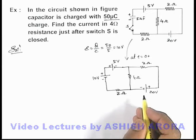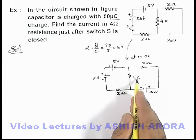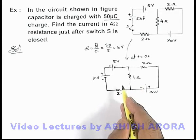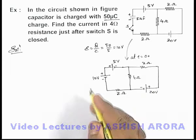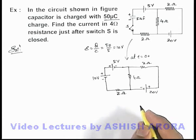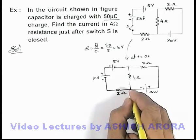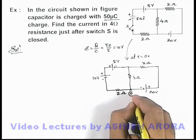In this situation, if we are required to find the current in 4 ohm resistance, that we can obtain by using KCL. For which we first need to distribute the potentials in the circuit. Say in this case, we assume potential at this terminal to be zero.